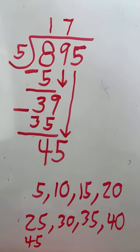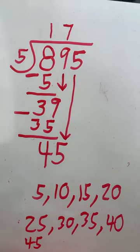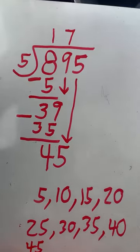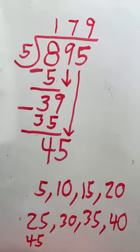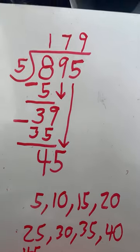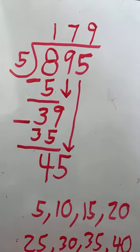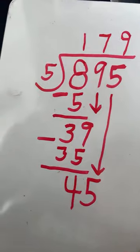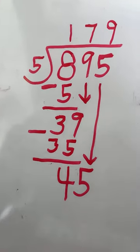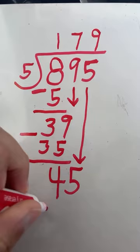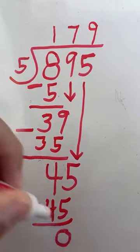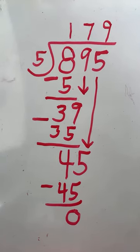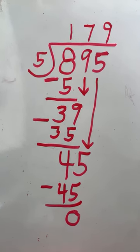We can get 9 groups of 5 within 45. So 45 divided by 5 equals 9. As you can see, there is no remainder here. And we have our final answer: 895 divided by 5 equals 179.